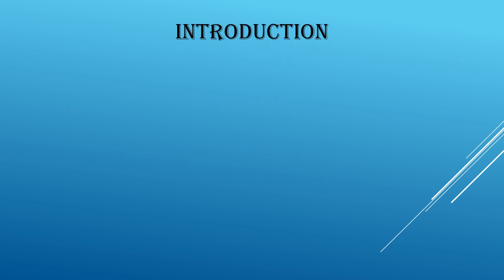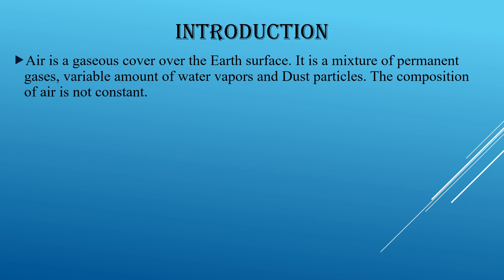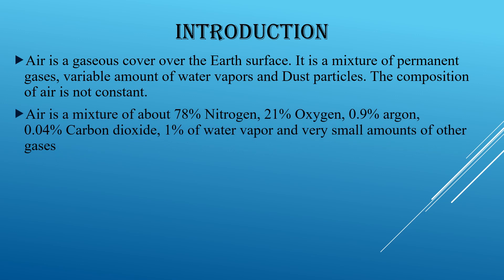Let's start with a short introduction. Air is a gaseous cover over the earth's surface. It is a mixture of permanent gases, variable amount of water vapor and dust particles. The composition of air is not constant. Air is a mixture of about 78% nitrogen, 21% oxygen, 0.9% argon, 0.04% carbon dioxide, 1% water vapor and very small amounts of other gases.